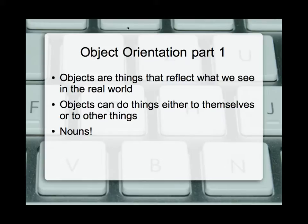With object orientation, the paradigm is a way of looking at the world. Our paradigm for object orientation is we're looking at the things that can do stuff. Objects reflect what we see in the real world. In the case of what we're using with App Inventor, we have lots of different objects.